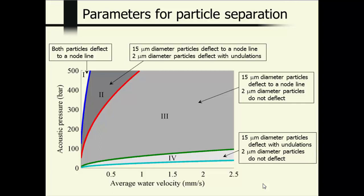In this large region 3 over here, 15 micrometer particles deflect to a node line and 2 micrometer particles don't deflect at all. So this would be a very easy region to perform separation in. As the power goes up or the water velocity goes down, 15 micrometer particles deflect to a node line and 2 micrometer particles begin to deflect. And finally, for highest power or lowest velocity, all the particles settle to a node line.